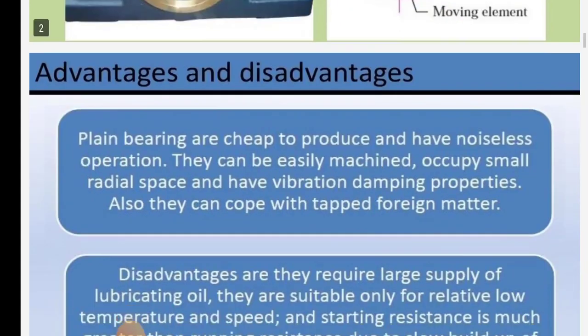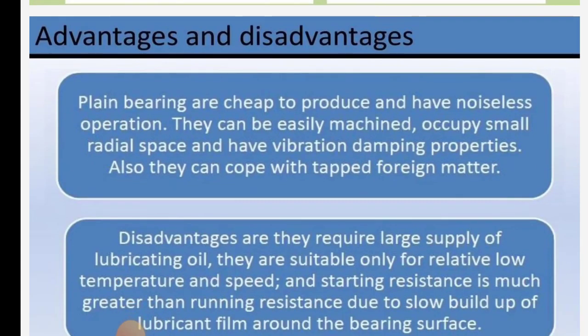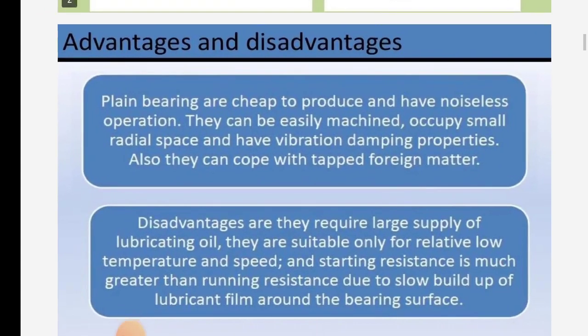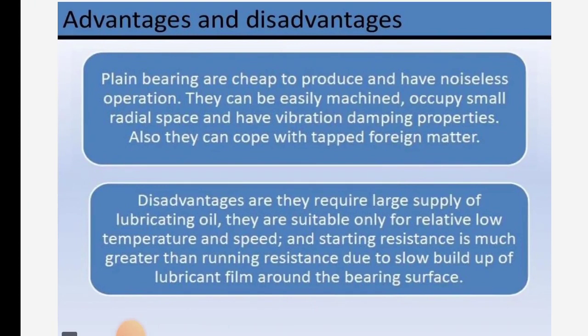Now we discuss advantages and disadvantages. Plain bearings are cheap to produce and have noiseless operation. They can be easily machined, occupy small radial space, and have vibration damping properties. Also, they can cope with foreign matter.